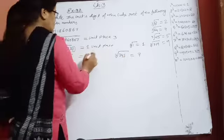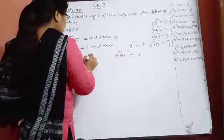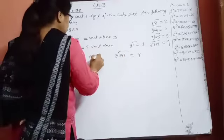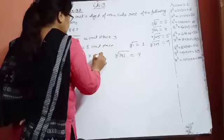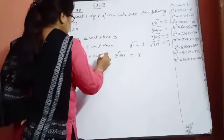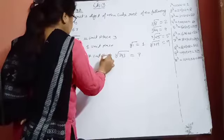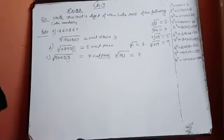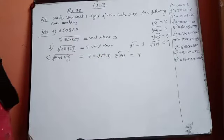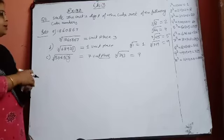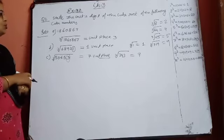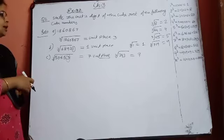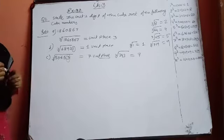Again. Then by 7 it will be divisible. See, 43 is there. 7 times 7 is 49, 7 times 5 is 35, 7 times 4 is 28, and 7 times 9 is 63.